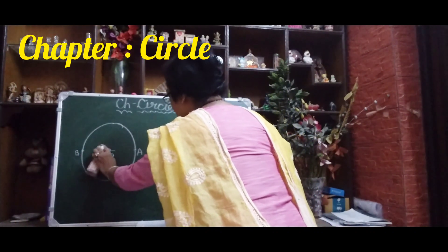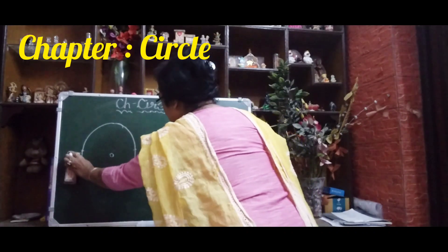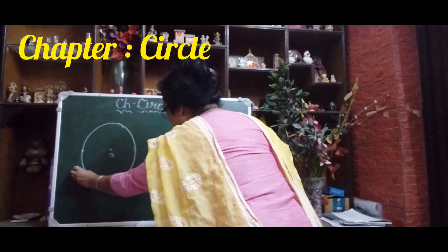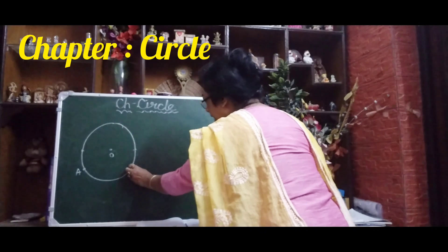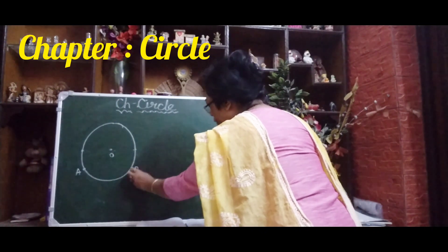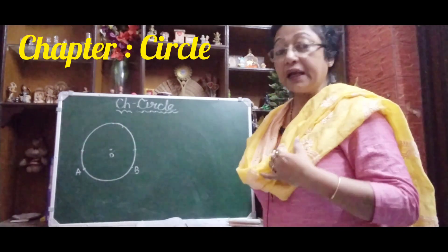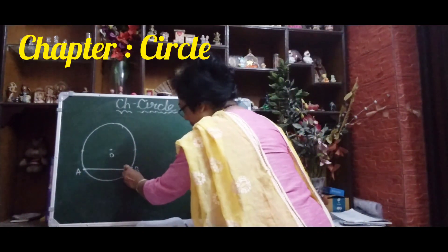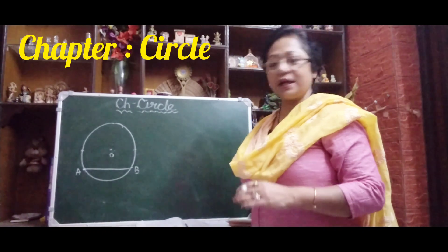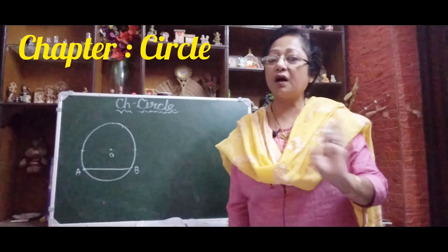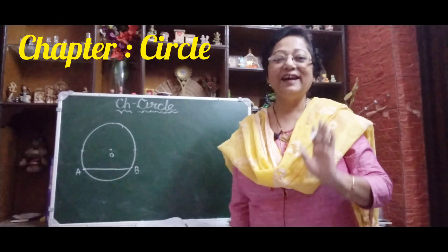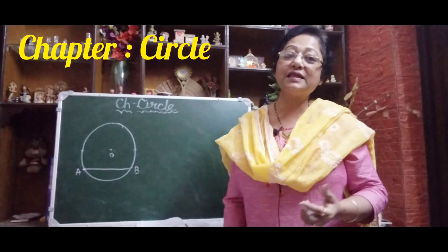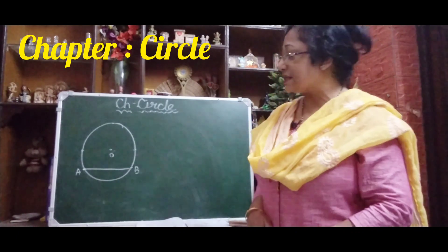Now I am rubbing OA and OB. I am taking a new chord AB — point A on the circle and point B also on the circle. I am joining this line segment AB. This line segment AB is not passing through the center, so this is not the diameter of the circle. This AB is the chord of the circle.